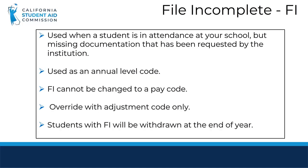FI — File Incomplete. This code was designed at the request of schools to report when you have a student who is in attendance at your institution but you are unable to process their award due to missing documentation that the student must provide — an example being residency verification. The key point to remember: this is a student you know is in attendance at your school. You will use this code when you are processing payments for students, not at the beginning of the academic year when you are still not sure if the student is there. Once the FI code is reported, you can only change it to an adjustment code.